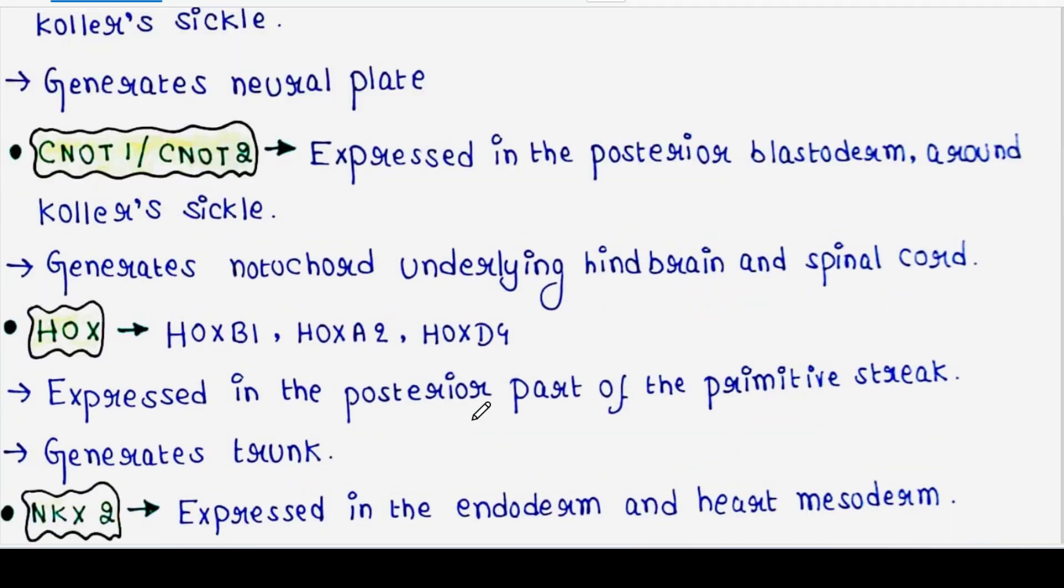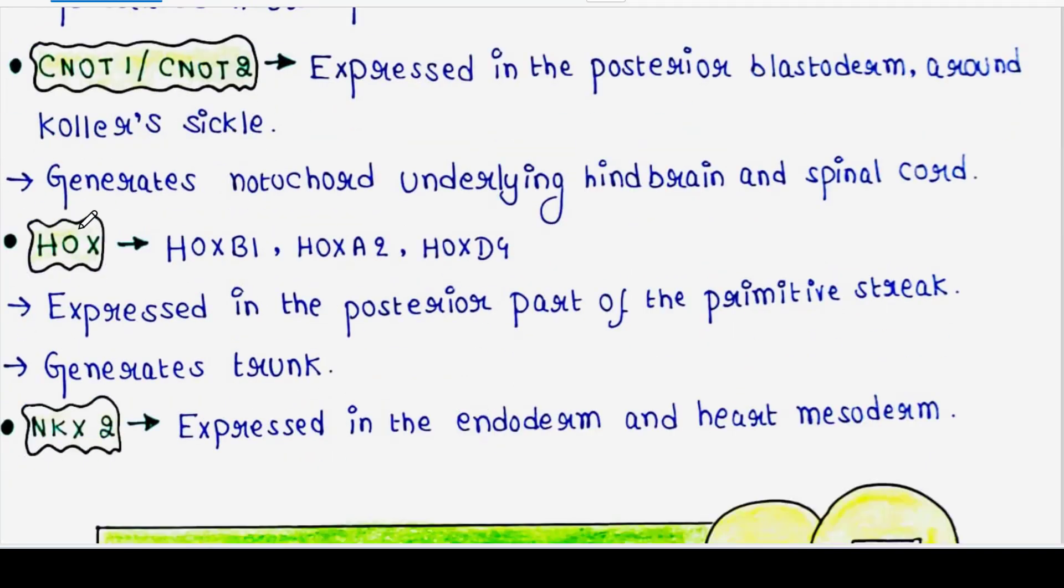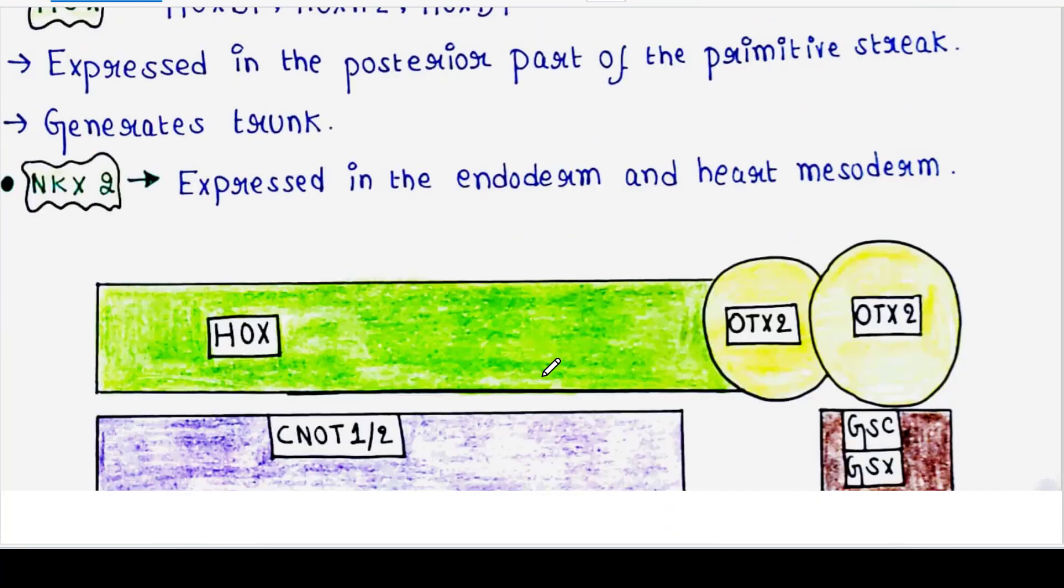Next is HOX. It is a family which contains many genes like HOXB1, HOXA2, HOXD4 like that. These are expressed in the posterior part of the primitive streak. They generate trunk.